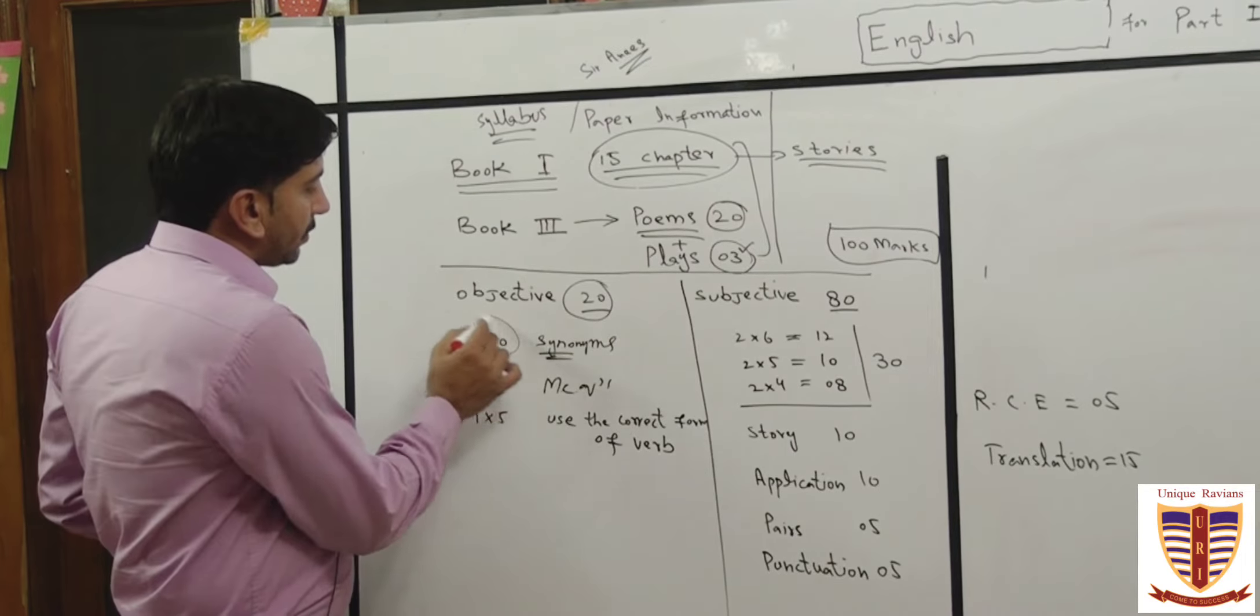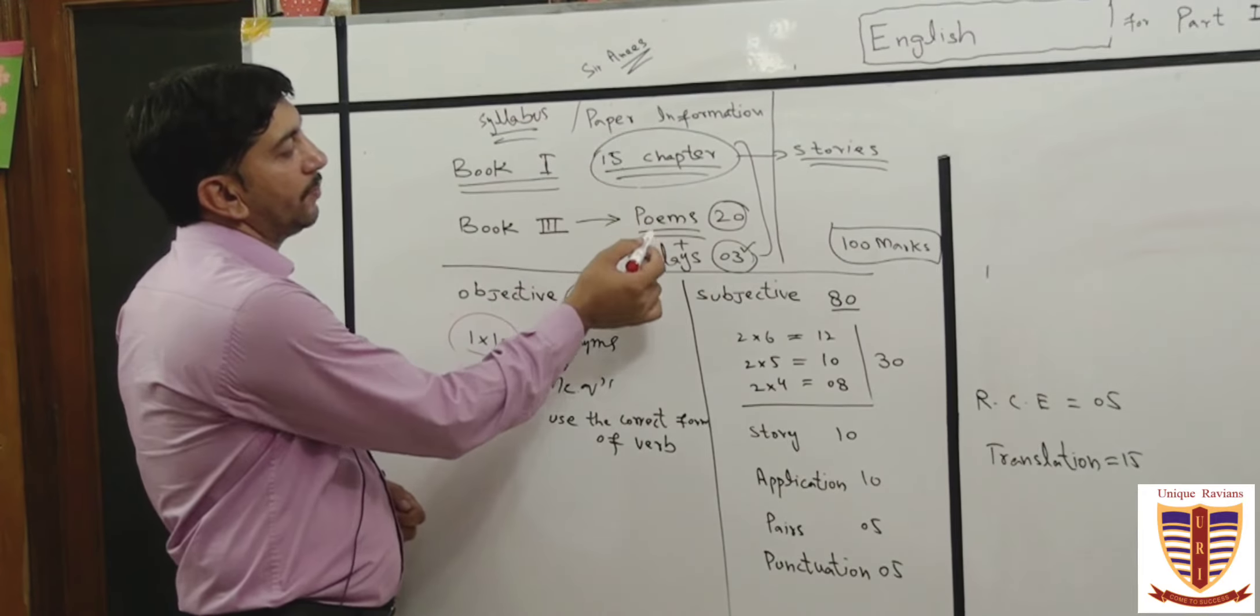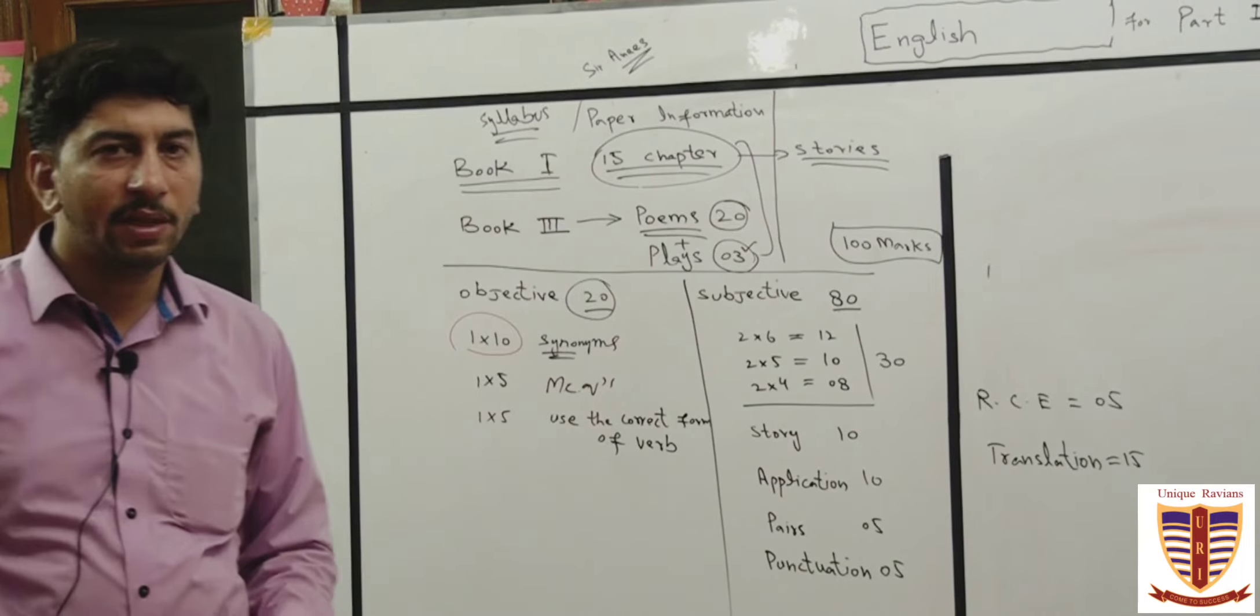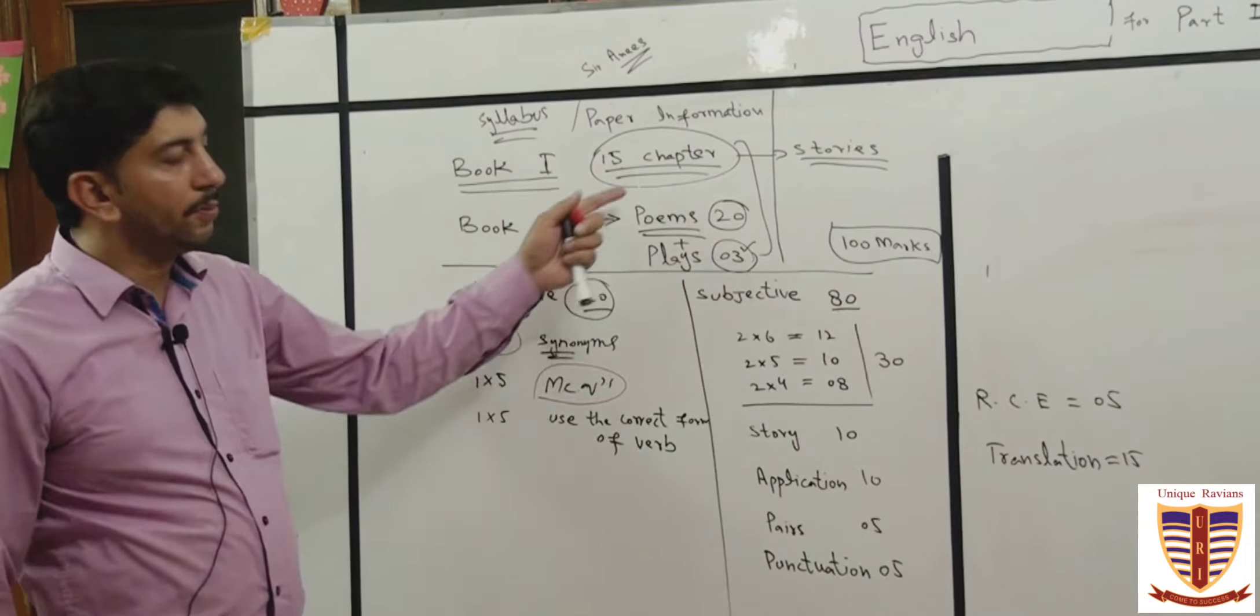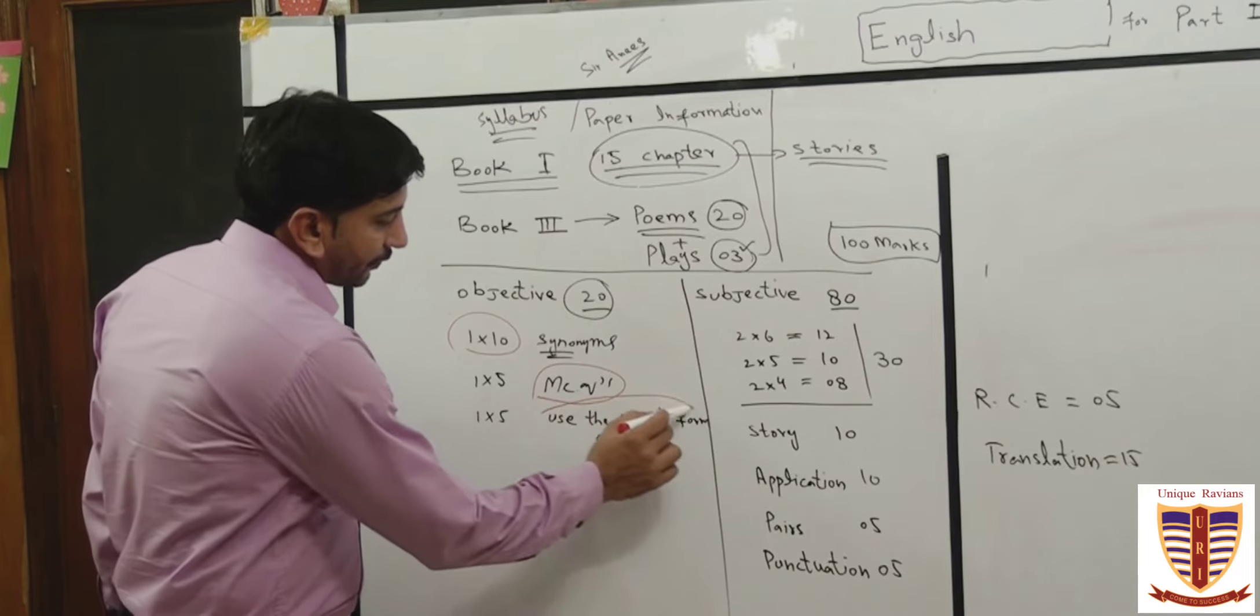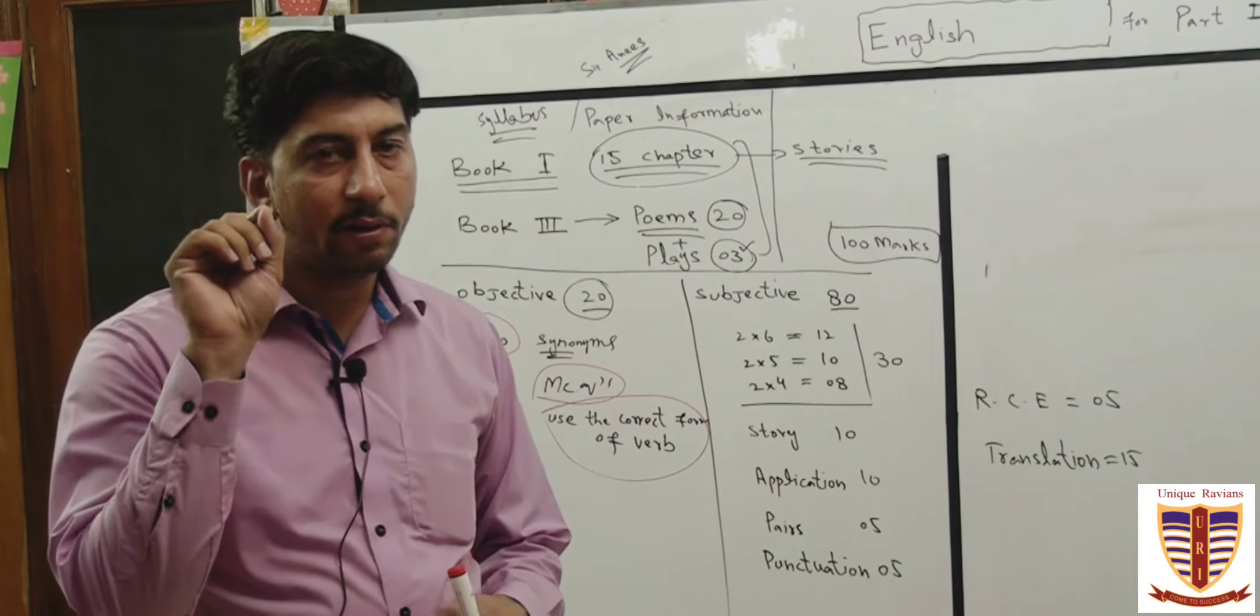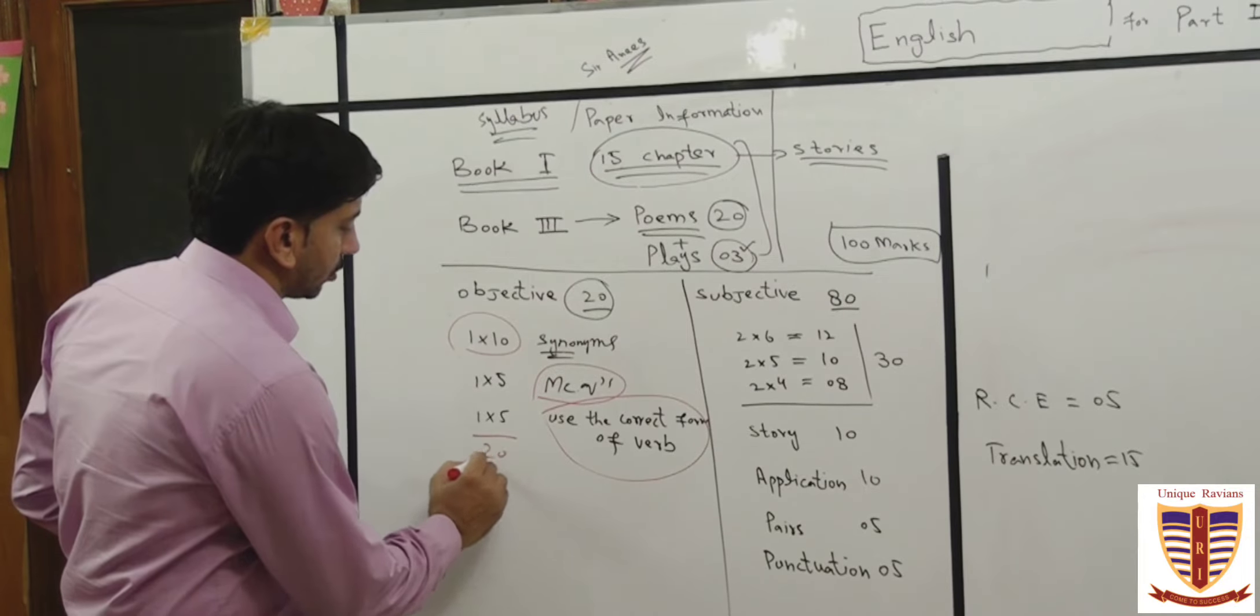10 synonyms, all three portions, 15 chapters, poems, plays, you people will have to attempt 10 synonyms, similar words. You will have to find similar word. 5 MCQs, again all three portions. Then correct use of the form of the verb. You will be given four options, one accurate one that you will have to find. 20 marks, so much easier.